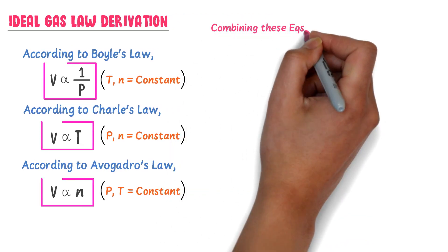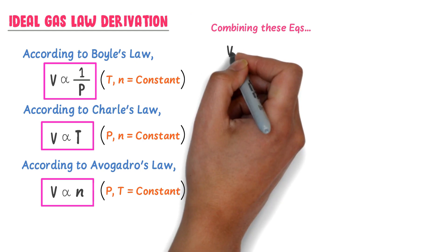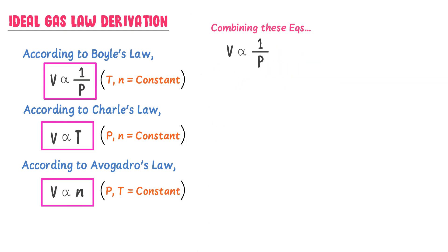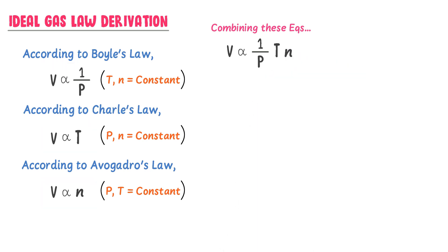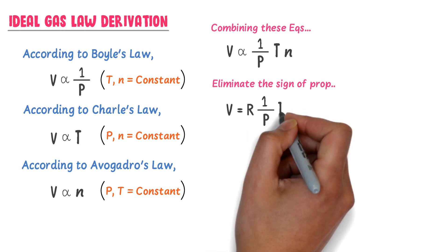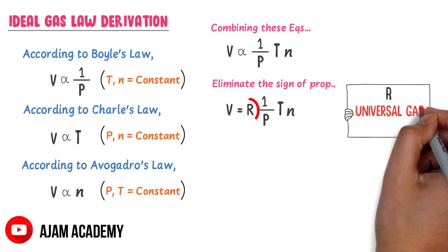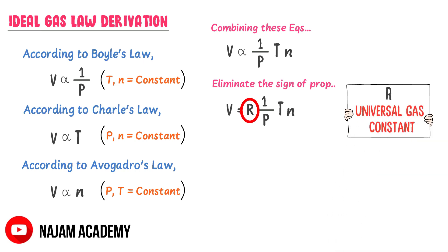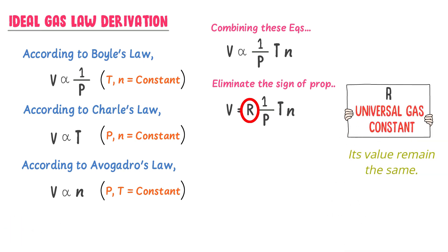Combining all three equations, volume is inversely proportional to pressure and directly proportional to temperature and number of moles. To eliminate the sign of proportionality, we introduce a constant, giving V = R × (NT/P), where R is the universal gas constant whose value remains the same for all gases — that is why it is called the universal gas constant.